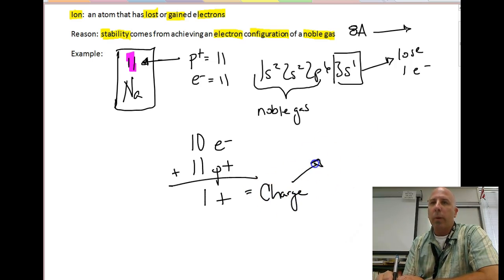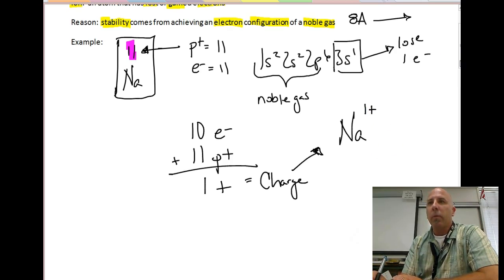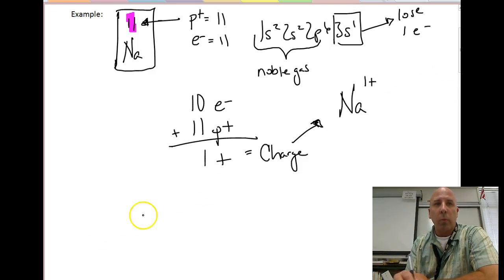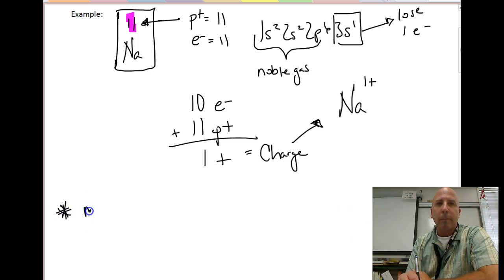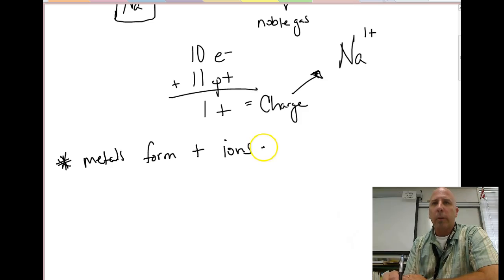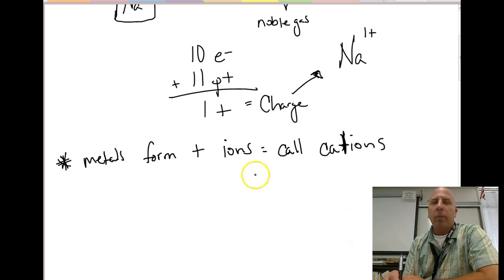The way we write this now is we denote sodium as having the symbol Na and a 1+ charge. That is the charge of sodium when it forms an ion. Now, whenever we have positively charged ions, such as sodium, and all metals form these positively charged ions, we call these positive ions cations collectively.